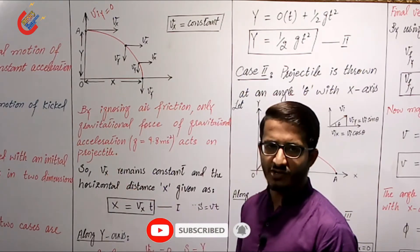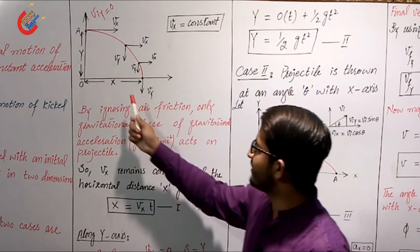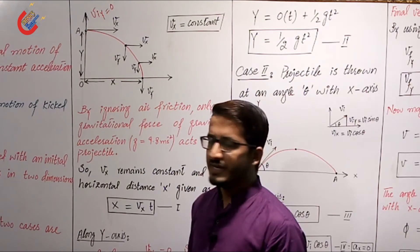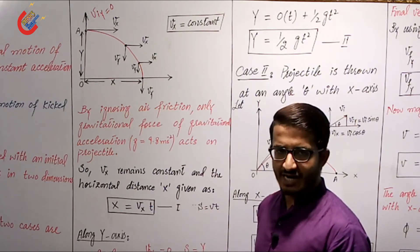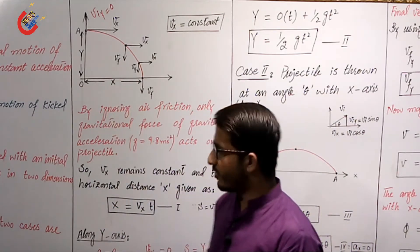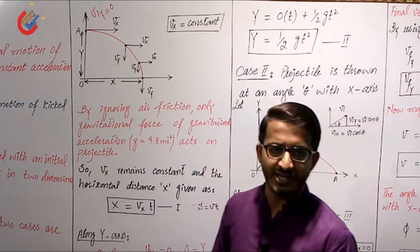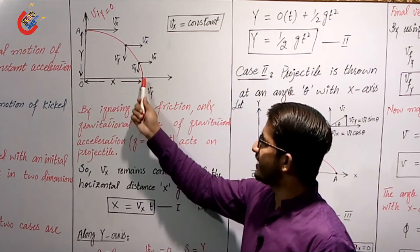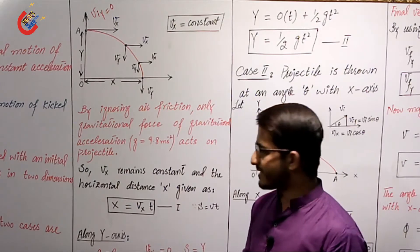By ignoring air friction, only gravitational acceleration g = 9.8 m/s² acts on the projectile along the y-axis; no acceleration acts along the x-axis. So Vx is constant, and the horizontal distance traveled along the x-axis is represented from the origin to the point where the body strikes the ground. Using the distance formula, x = Vx × t, where Vx is the initial velocity along x and t is the time until the body reaches the ground.